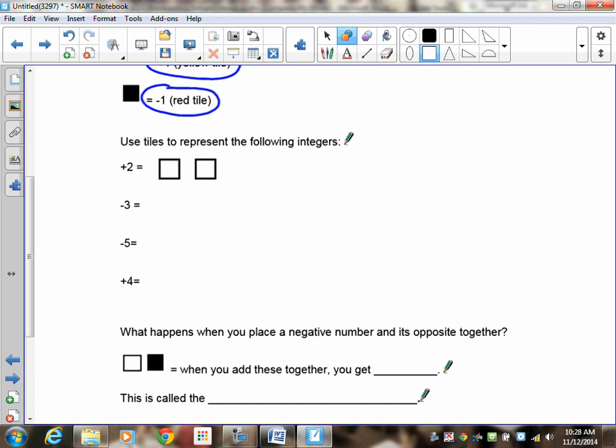So, let's do the first one. Using tiles to represent the following integers. Now because it's positive two, it's going to be clear and open, and there are two of them. So to represent this, this is what it's going to look like. There's the first one. There's the second one. That is positive two. Positive one plus positive one. To look at the negative tiles, you've got one, two, three. Very similar to what we did already. So quickly pause the recording and do negative five and positive four, and then we'll quickly check it.